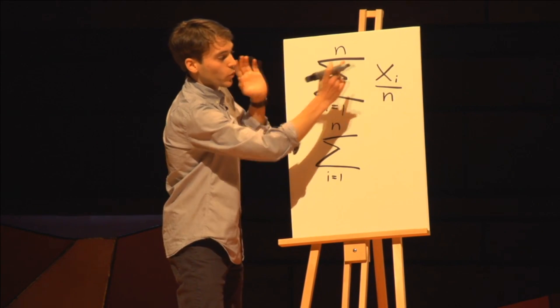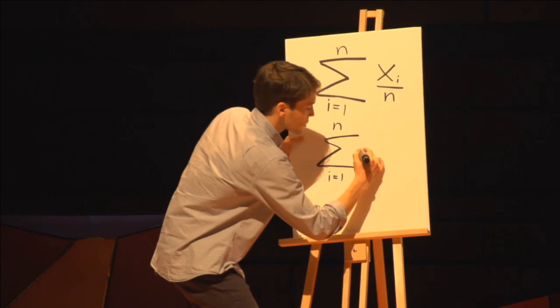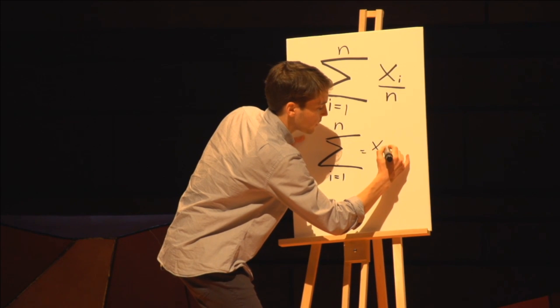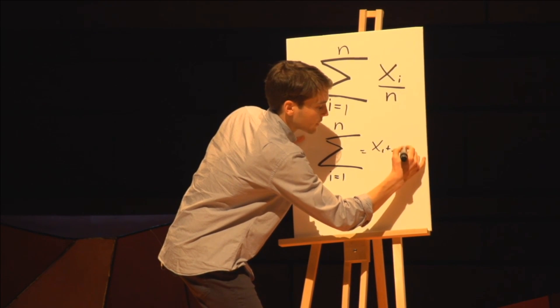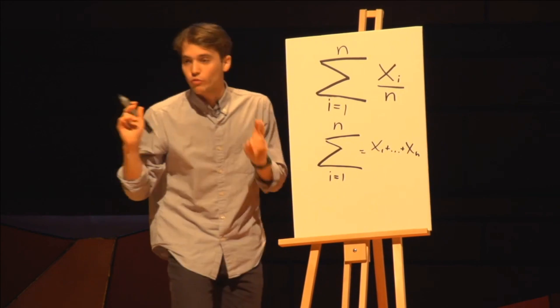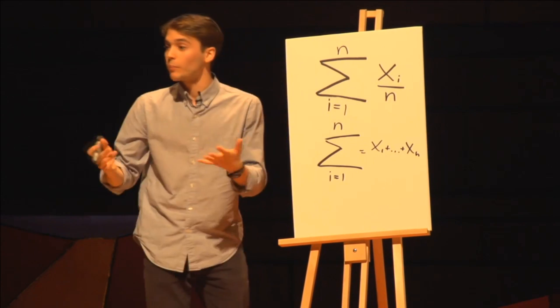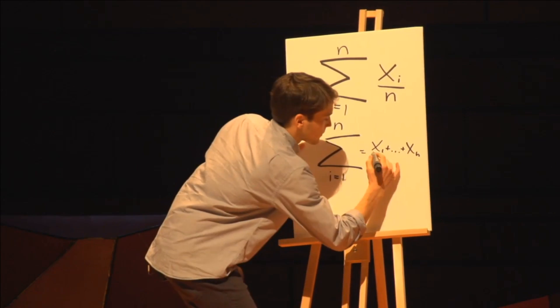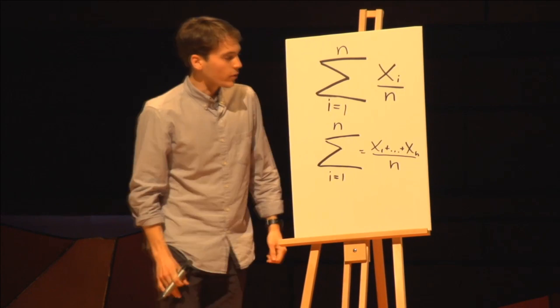In our equation, we're adding x values, starting with the first x value and continuing all the way until the last x value, in this case, the nth value. Then, in our equation, we're dividing by n, the number of values we have.